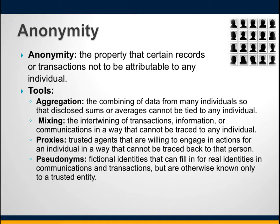Anonymity is the property that certain records or transactions are not attributable to any individual, using techniques like aggregation, mixing, and proxies. The idea is that data available across various databases should not be joined together to reveal sensitive or private information. If you are anonymous in one database, you should remain non-identifiable across all databases — it should not be possible to aggregate data from multiple sources to reveal a person's private information.